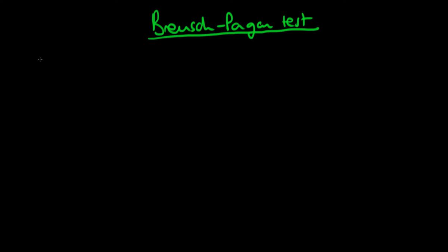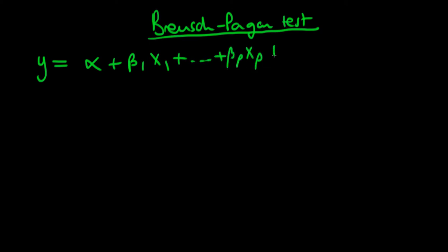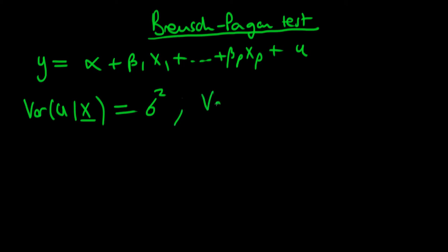So what do we mean by more general forms of heteroskedasticity? Well, the idea is that if we have some population process y = α + β₁x₁ + ... + βₚxₚ + u, then if we have homoskedastic population errors, the variance of u given all my independent variables x should be equal to some constant σ². Contrast this with the heteroskedastic case, where the variance of u given x would equal σ² times some function of my independent variables.